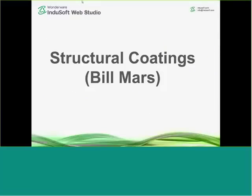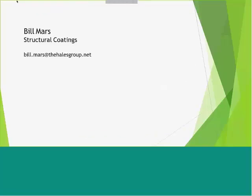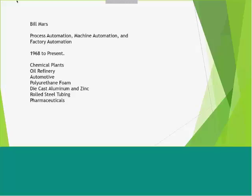My name is Bill Mars, and I work for Structural Coatings in Clayton, North Carolina. I've been in the automation industry since 1968. I've worked in chemical plants, oil refineries, automotive, polyurethane foam, die-cast aluminum and zinc, rolled steel tubing, and pharmaceuticals — most of the industries I've worked in before getting into the steel industry.